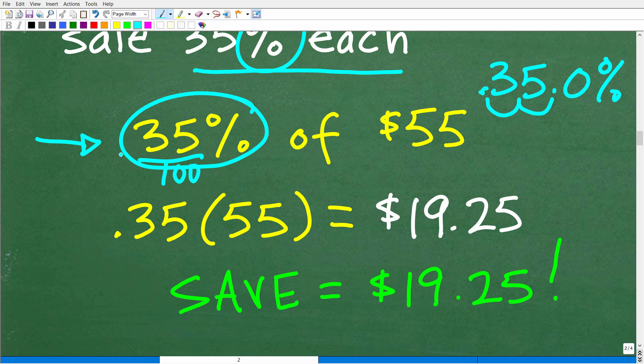What we want to do is change our percent to a decimal and then multiply by the number. So 0.35 times 55 is 19.25, $19.25. Now, what is this? Is this how much we are going to pay for this lovely widget? No, this is not how much we're going to pay.